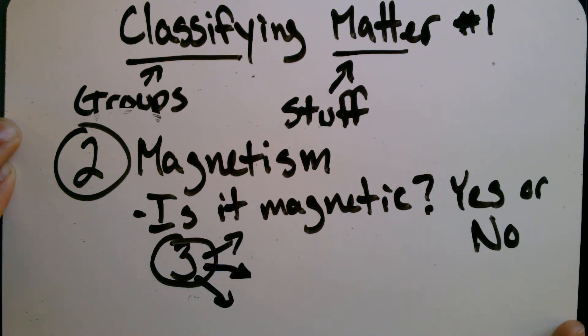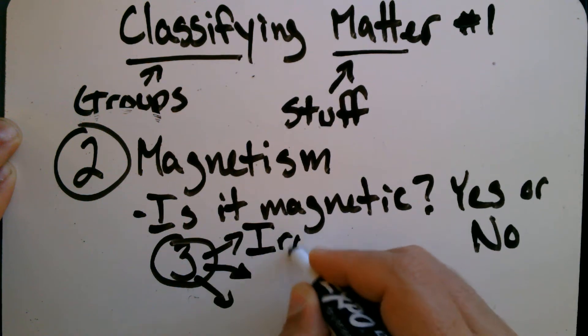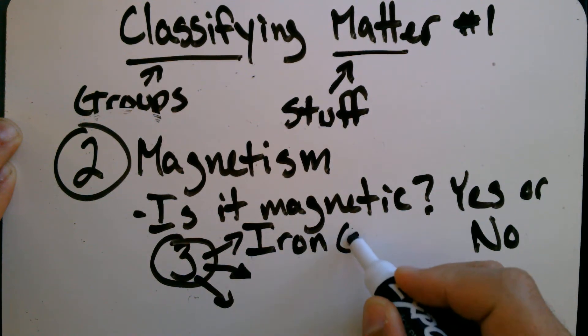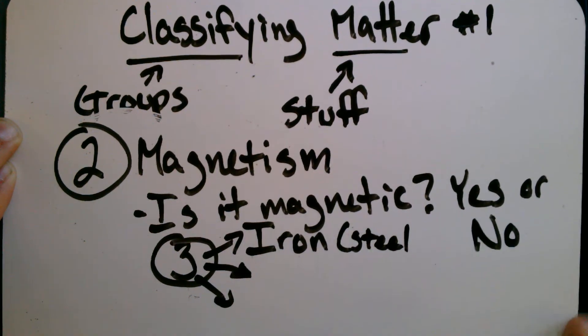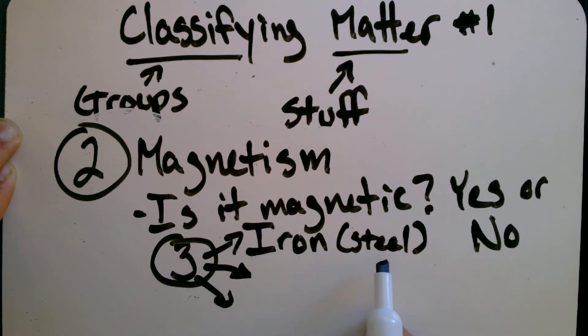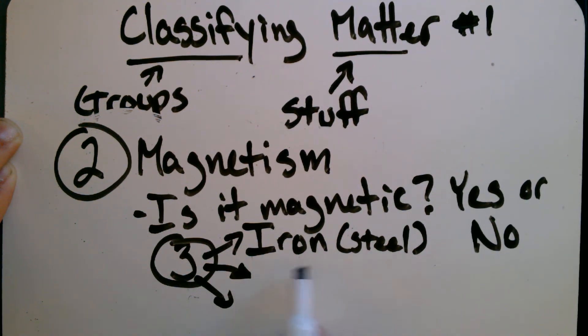Before I write them down, just in your head, take a guess at what one might be. Got a guess in your head? All right, let's see if you're right. So, the first one, and it's the most common, is iron. Iron is magnetic. Now, if you said steel, you're partially right. Steel is actually made from iron. So, the reason why steel is magnetic is because iron is magnetic. A lot of times, we mix metals together to make stronger substances. They're called alloys. And steel is an iron alloy. All right, but iron is magnetic.